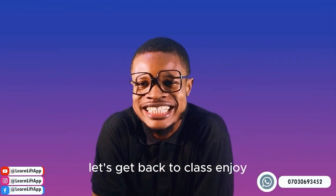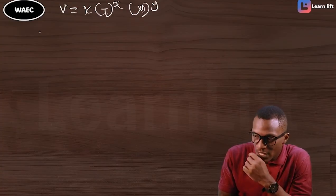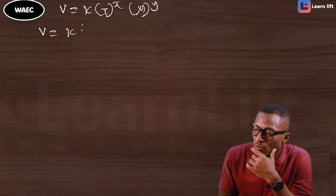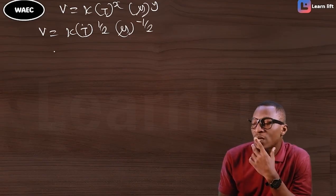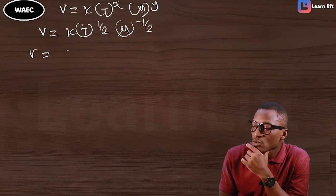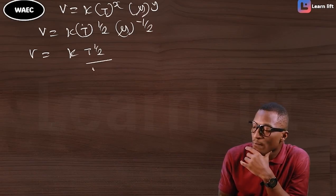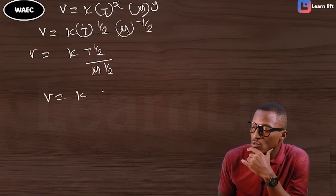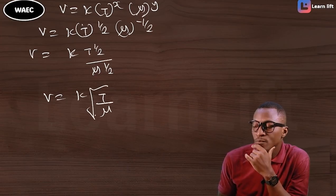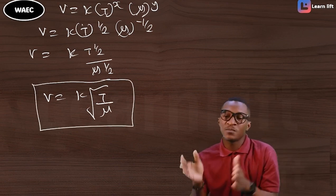Going back to our initial equation: v = k · T^x · μ^y. Our x is ½ and y is −½. So v = k · T^(½) · μ^(−½), which means v = k · √(T/μ). That's the formula. Very simple — it's also explained in the notes and in this video.